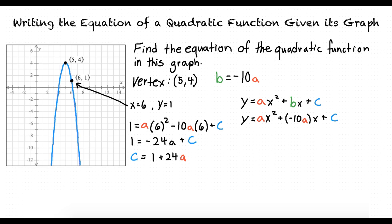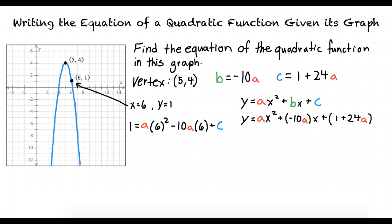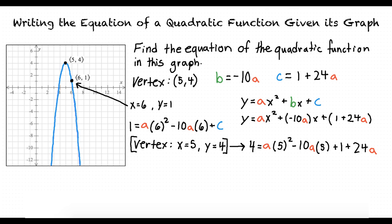Now that we have new values for b and c, we can insert them both into our original quadratic equation form. Now that our equation is all in terms of a, we can solve for the numerical value of a by substituting the x and y values of the function's vertex into our new quadratic equation. The vertex of our function has an x value of 5 and a y value of 4. Substituting this in, we find that a is equal to negative 3.